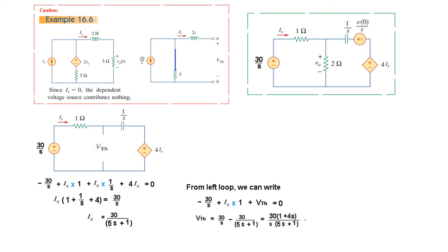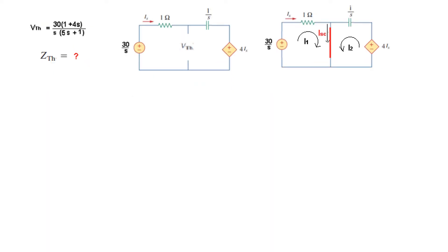Now we need to find Z_thevenin. There are several methods — I strongly recommend watching my video on Thevenin's theorem. We can add a 1V voltage source, a 1A current source, or short-circuit the load terminals. We choose to short-circuit the output, keeping the independent voltage source in place, and find the short-circuit current i_sc.